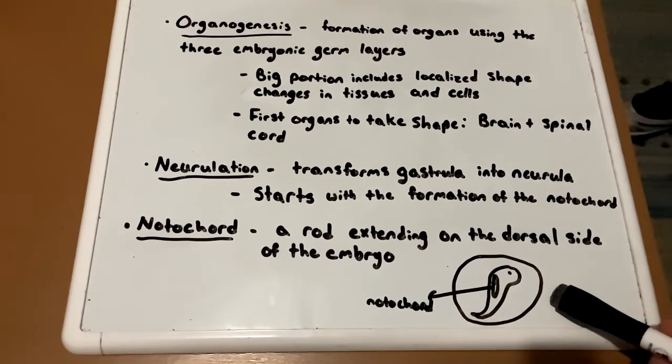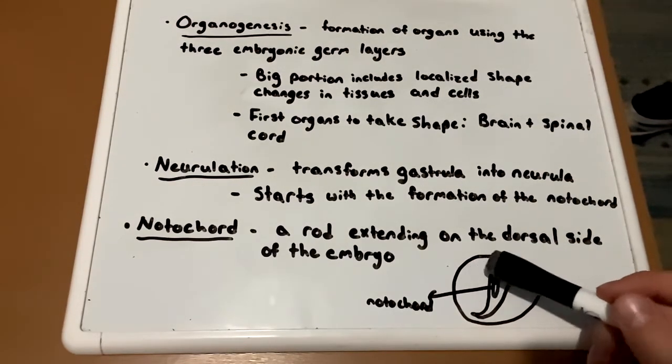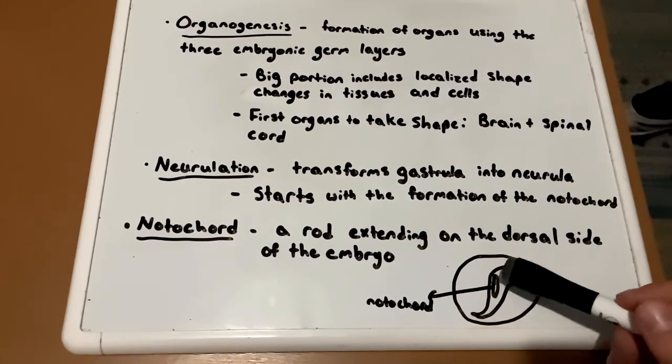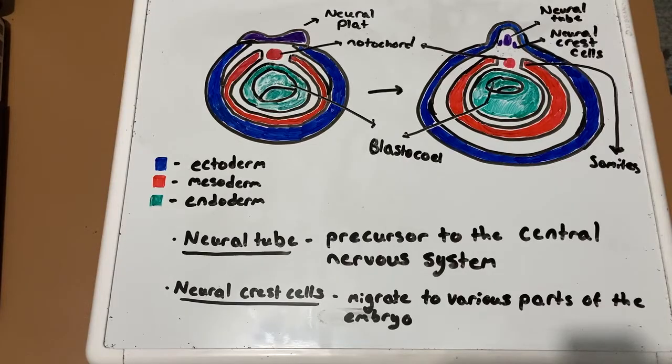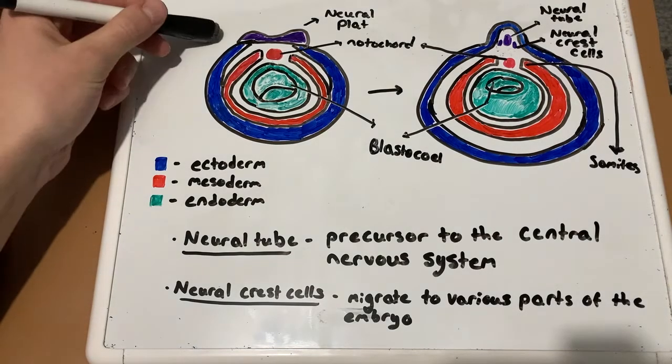Again, this is not drawn to scale, but the dorsal side is the back side of the embryo, so you'll see this rod forming there. The notochord, along with other mesodermal cells, then releases signaling molecules which cause the ectoderm cells sitting above the notochord to produce the neural plate, which is seen here.